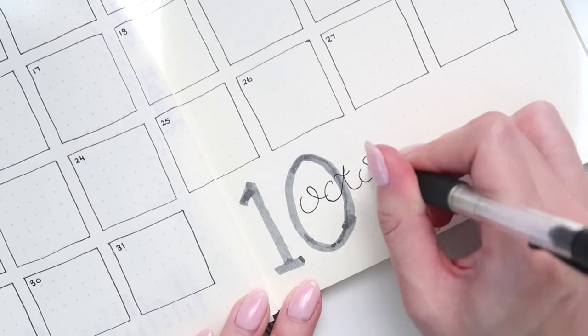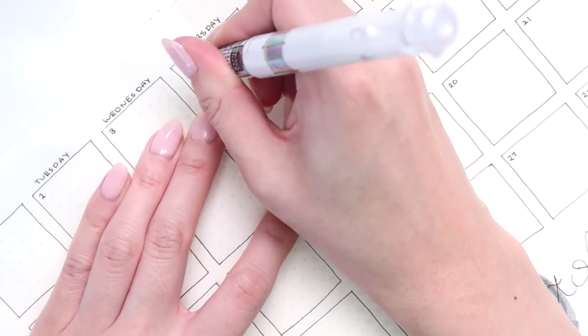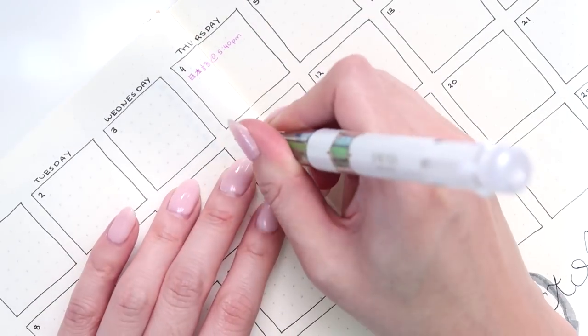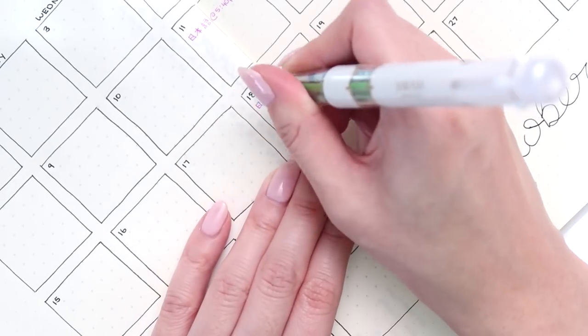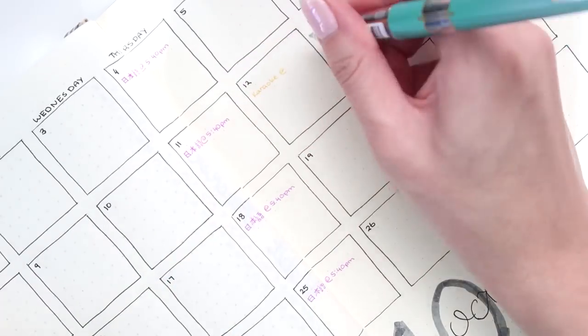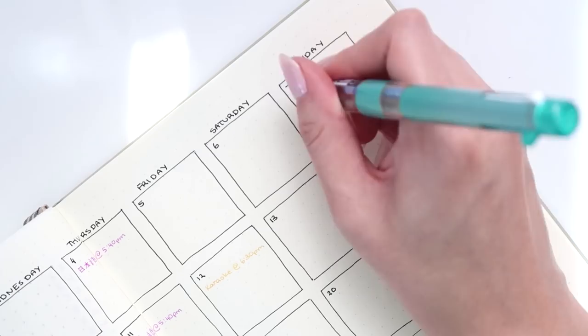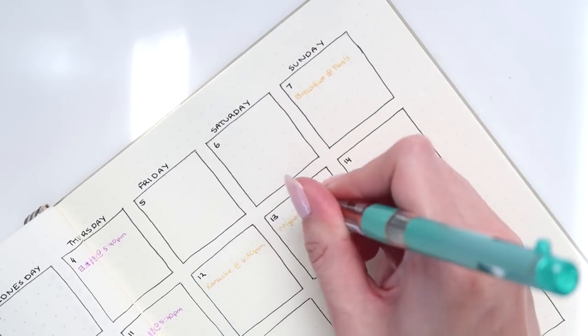And so that's pretty much my entire monthly setup for October. I decided not to feature a weekly spread this time just because I had a couple extra pages this month and I didn't want the video to be too long, but let me know what you guys think. Do you prefer the videos to be longer? Shorter? I'm always curious to know what you guys think.